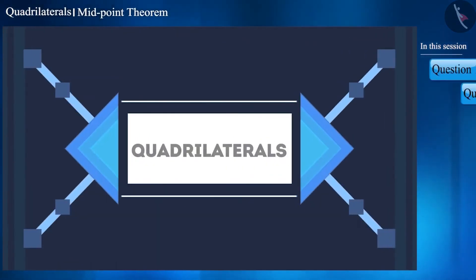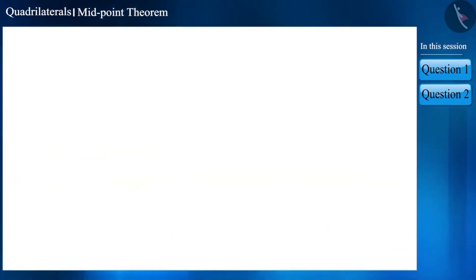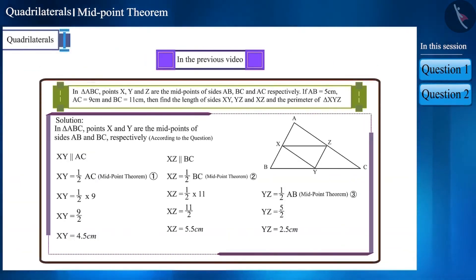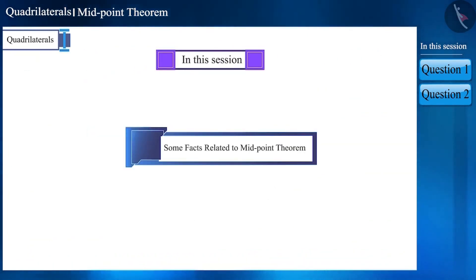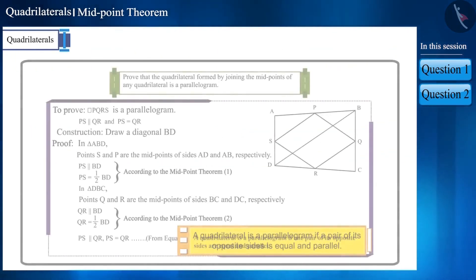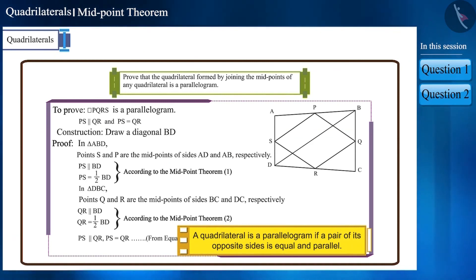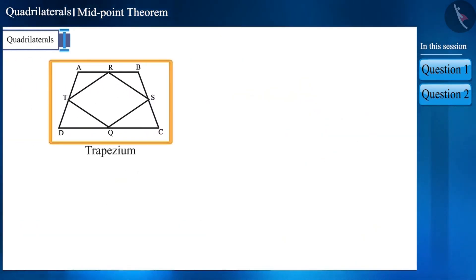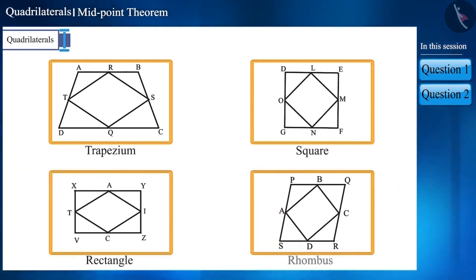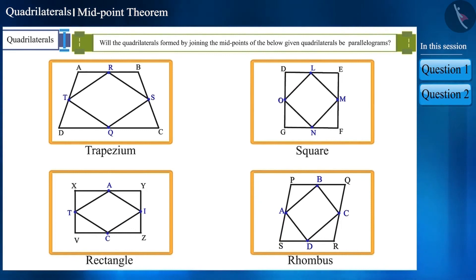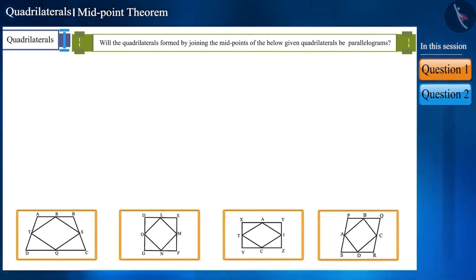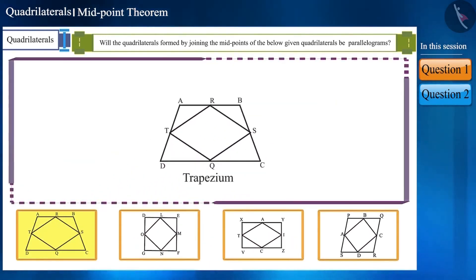Hello friends, welcome to this video on quadrilaterals. In the previous video we solved some questions related to the midpoint theorem. Today we will discuss some facts related to that. We proved that the quadrilateral formed by joining the midpoints of any quadrilateral is a parallelogram. So will the quadrilaterals formed by joining the midpoints of a trapezium, a square, a rectangle and a rhombus also be parallelograms? Let's find out by looking at trapezium ABCD.